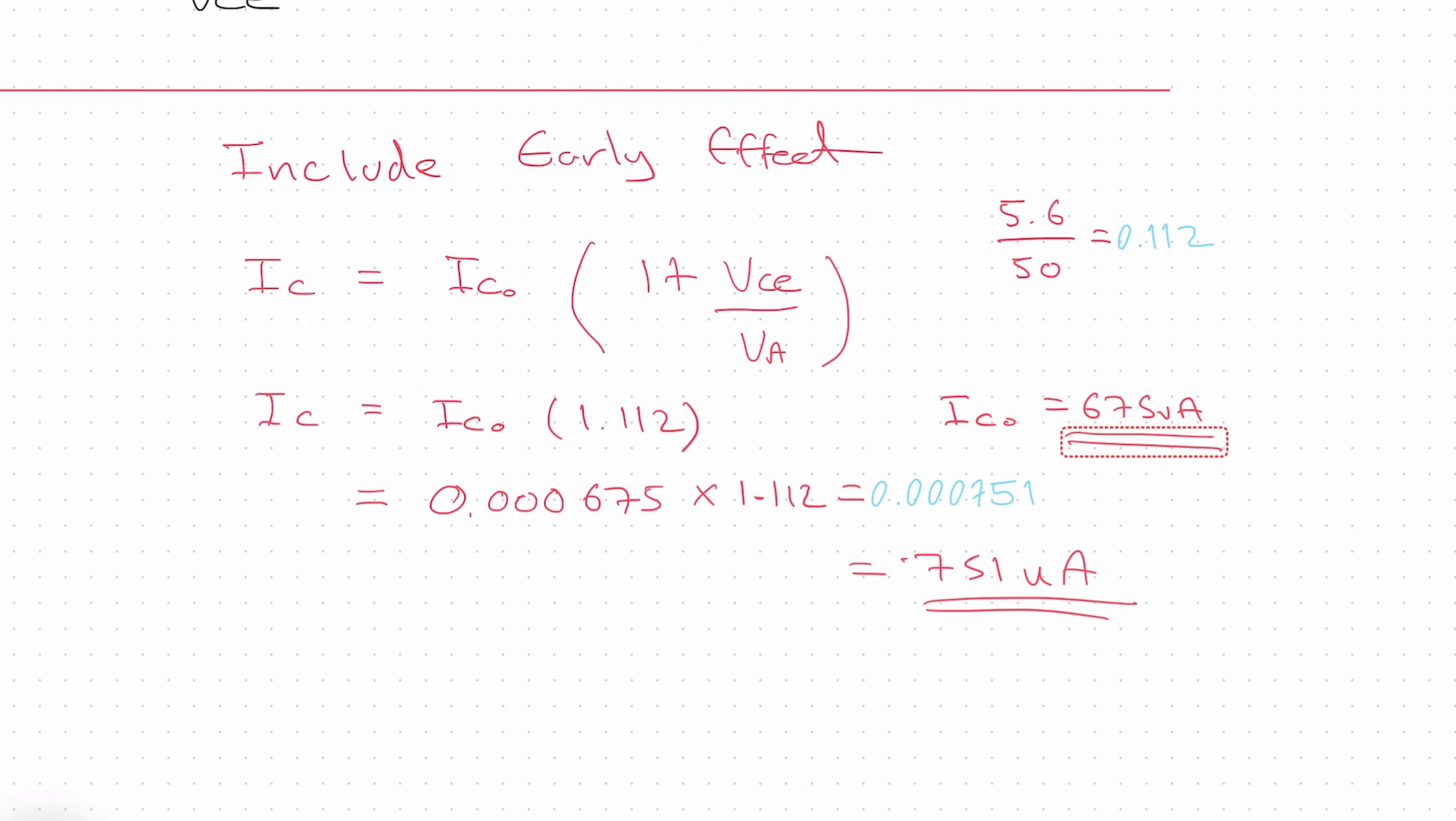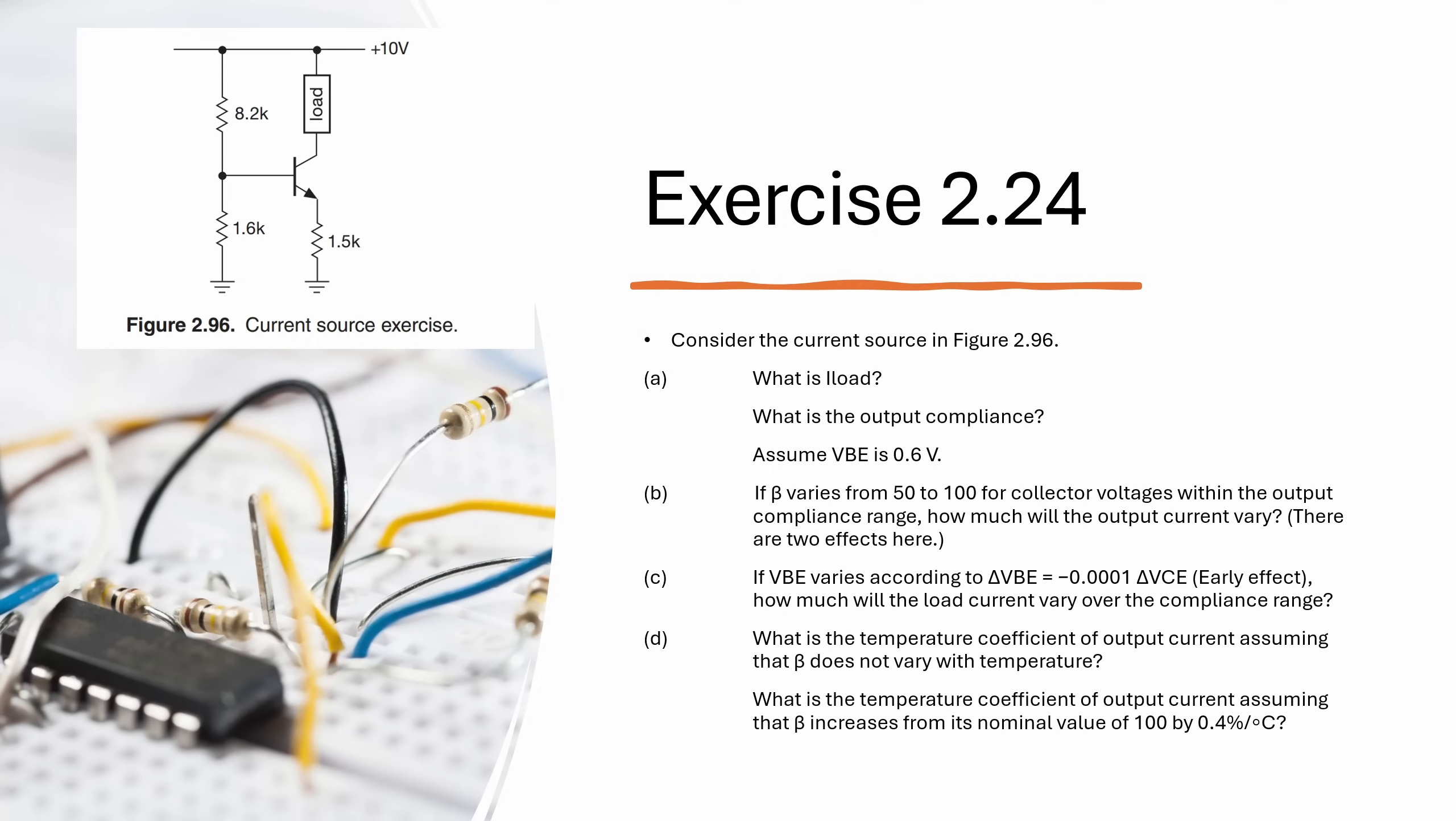Now, if you do the same calculations for a beta of 100, we would get 682 for IC0. And for the second IC, we would get 757 microamps. So I don't want to make this video too long. So I'll go through question C and question D in a second video. But in this video, I think we've been through part A and part B in quite a lot of detail.